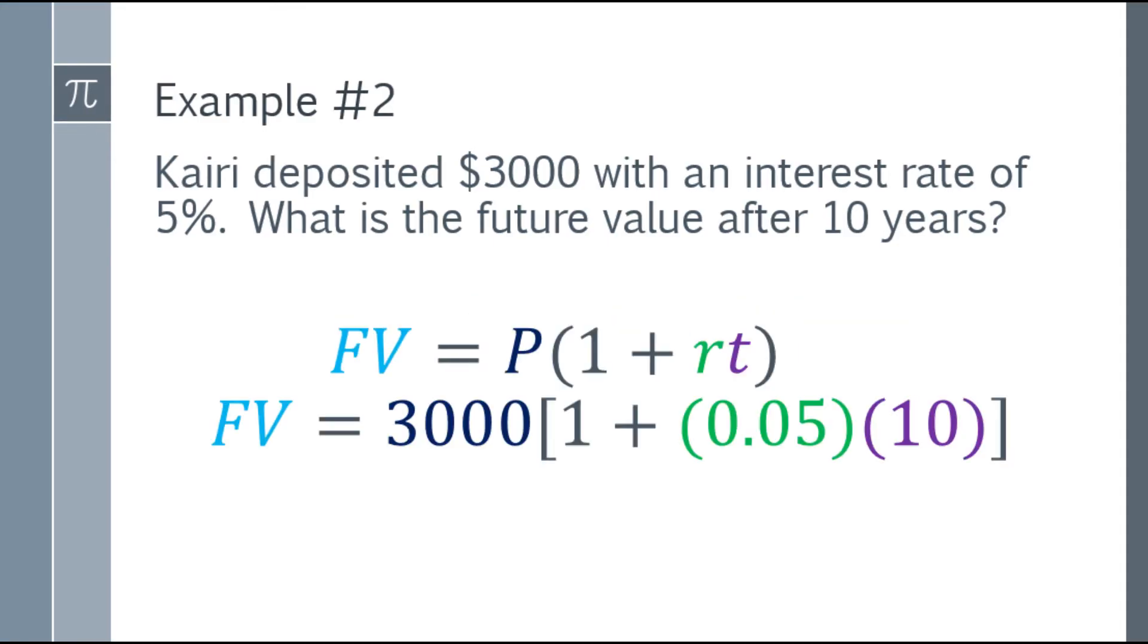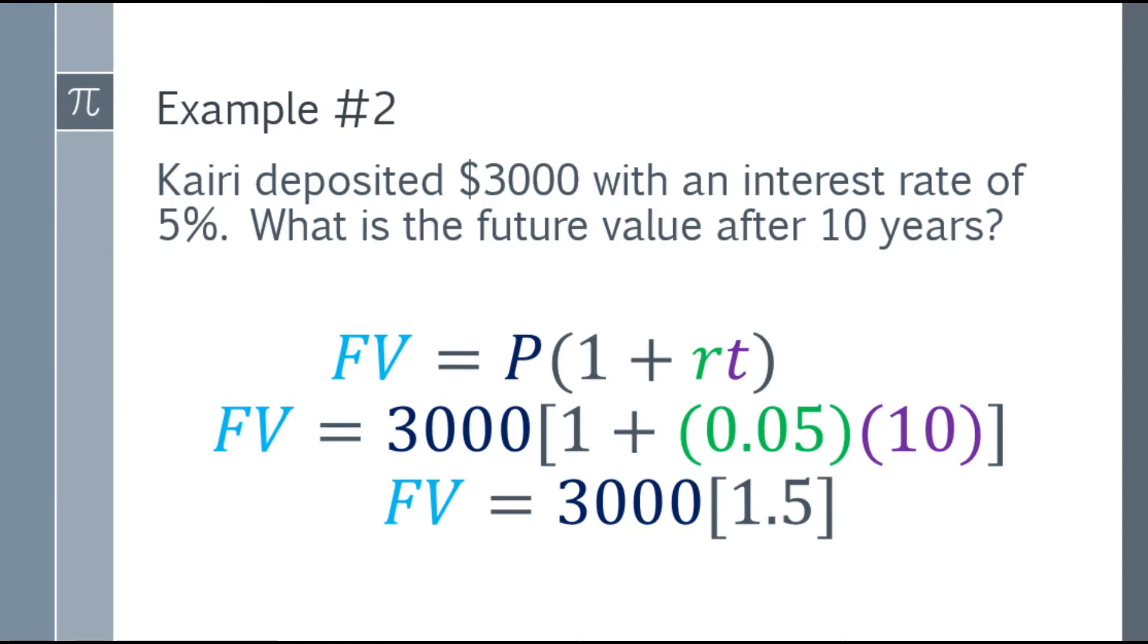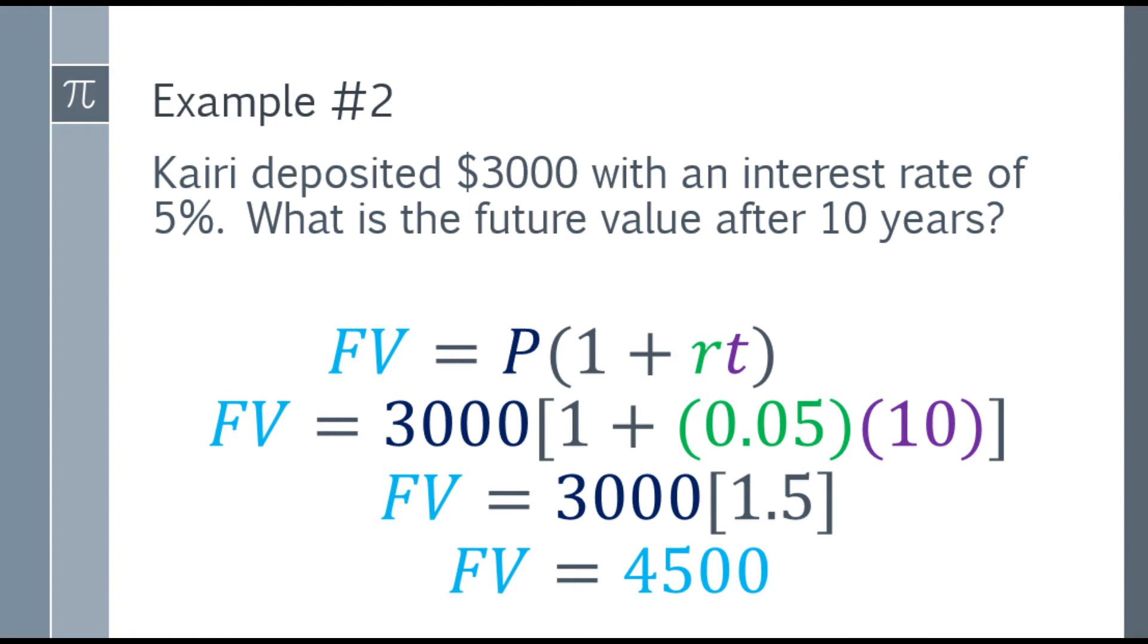So future value is equal to $3,000 times the quantity of 1 plus 0.05 times 10. So multiply 0.05 times 10 first, that will be 0.5. Add 1, that will be 1.5. So it becomes $3,000 times 1.5. So the final answer for the future value is $4,500.